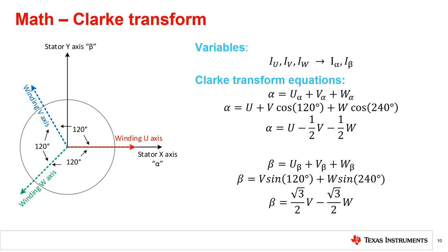You might be wondering, how do these Clark and Park transforms work exactly? Starting with the phase currents U, V, and W in the control feedback loop, we begin the Clark transformation using these equations for alpha and beta. We note that the original phase currents are each separated by 120 degrees and convert them to the fixed alpha-beta coordinate system using simple trigonometry.